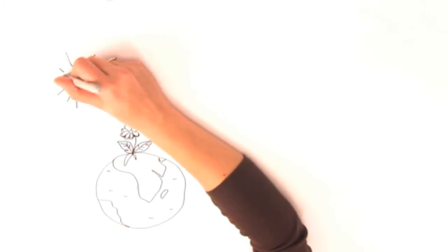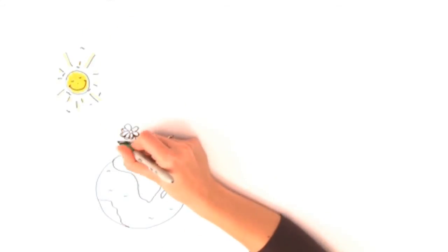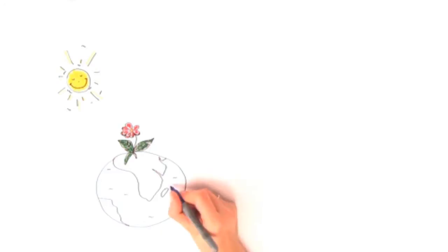Everything starts with the sun. It allows us to see colors, but more importantly, it gives energy to the plants through a process called photosynthesis.